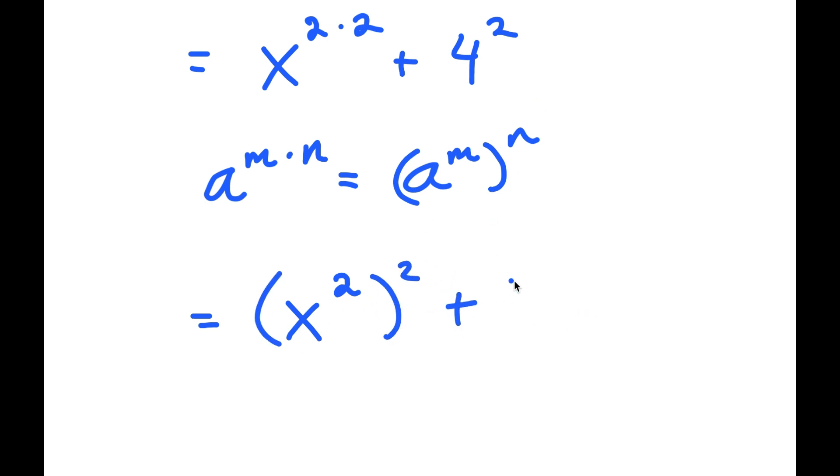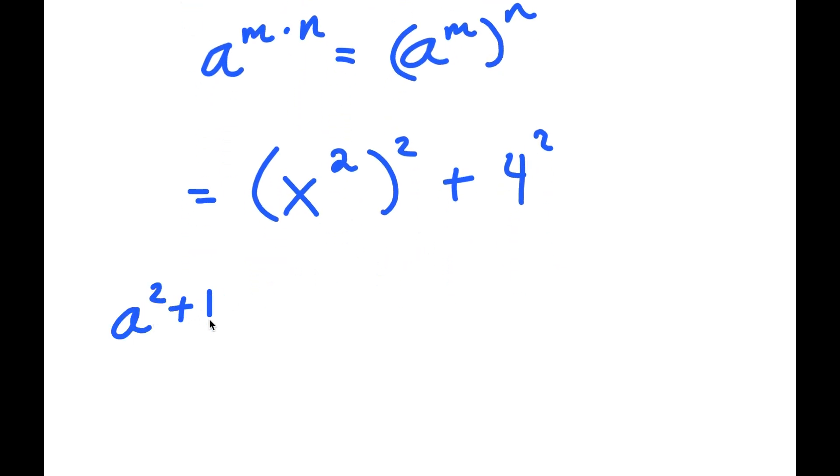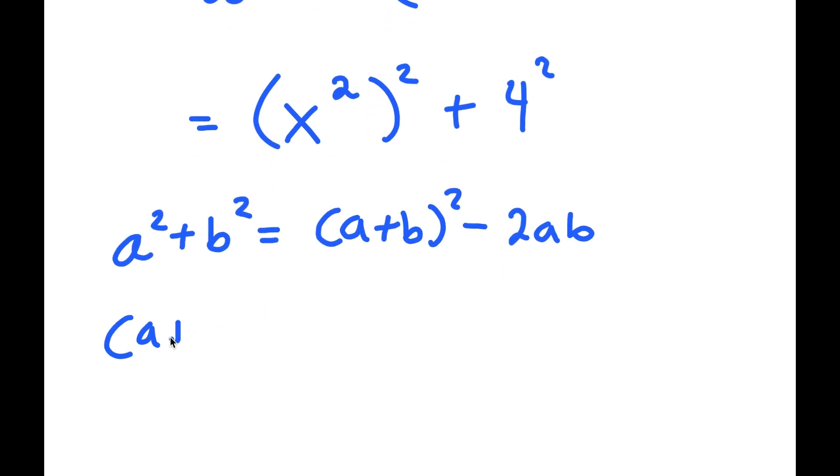And 4 squared, we'll keep that the same. Now, if I have something in the form a squared plus b squared, this equals a plus b squared minus 2ab, because a plus b squared equals a plus b times a plus b.